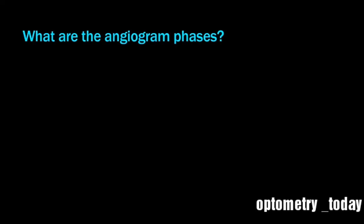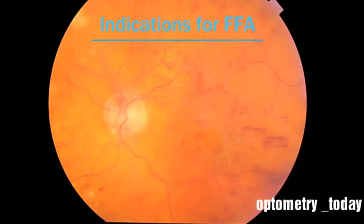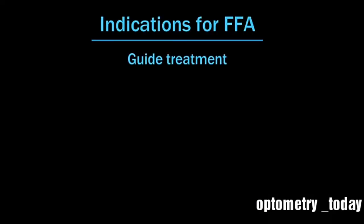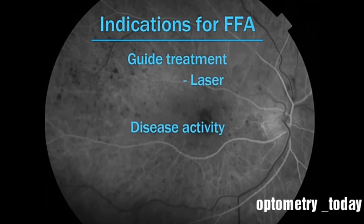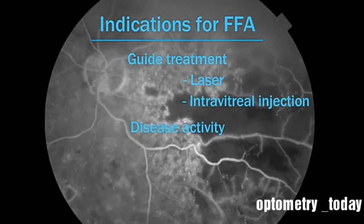The angiogram can be summarized as: it's done to guide treatment — to see whether there's leakage that needs laser or injection, or if there's a blockage to see whether they need targeted PRP or something like that. It's to make a decision to guide treatment. If for example you think there's a membrane but you're not going to treat it either way, there'd be no purpose in doing it. Likewise, if you have a CSR and you're not going to treat it at this point, what is the purpose of doing an angiogram?